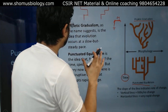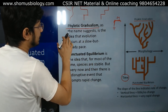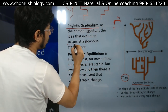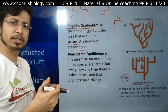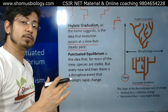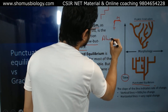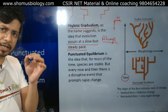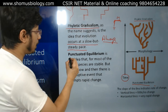In gradualism, the name suggests the idea that evolution occurs at a slow but steady pace — slow gradual changes over a long period of time, and the process works always. That means, as per gradualism, evolution is always going on at a very slow rate over a long period of time.